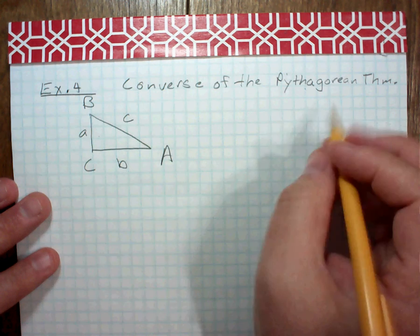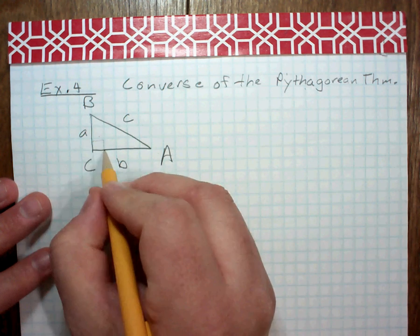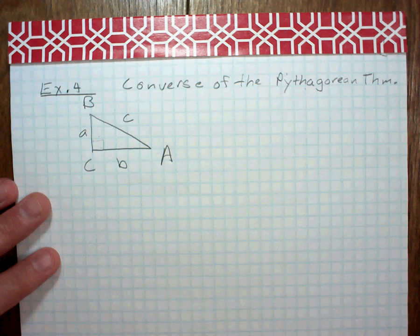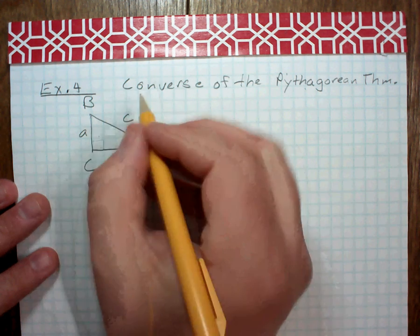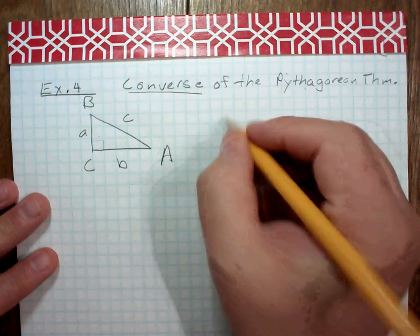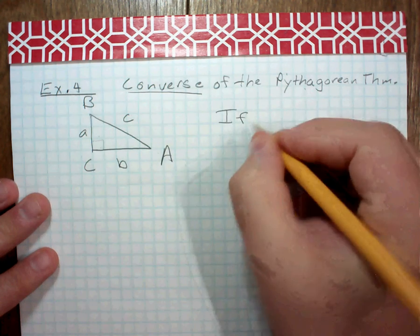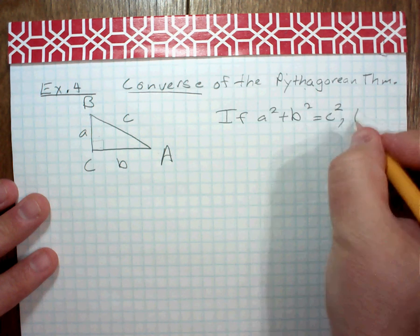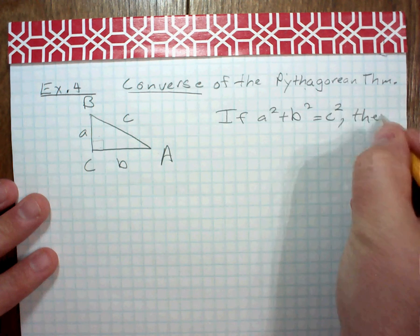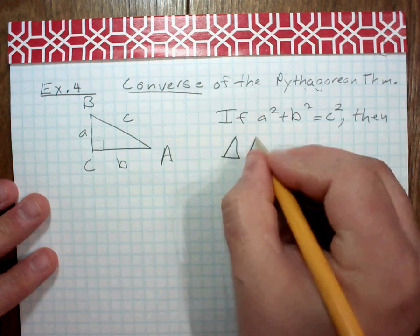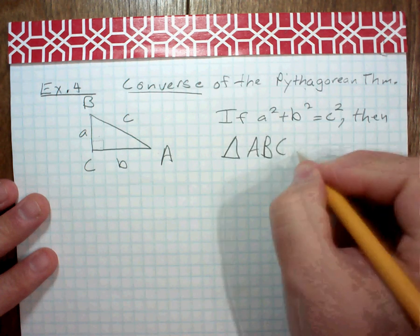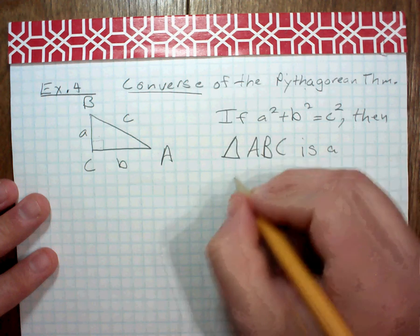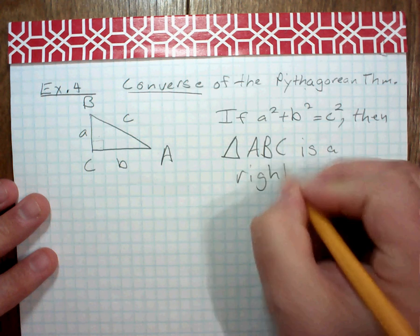Our original theorem was, hey, we were told that it was a right triangle, therefore a squared plus b squared equals c squared. The converse is the other way. If a squared plus b squared equals c squared, then triangle ABC is a right triangle.